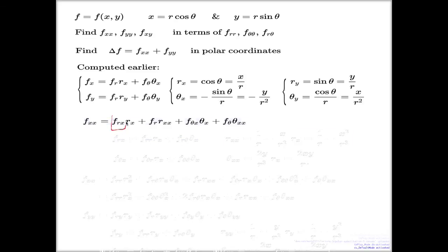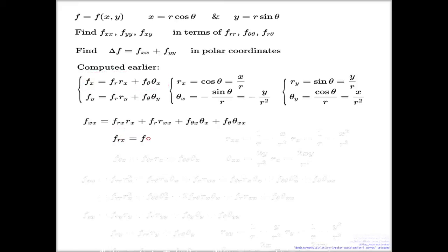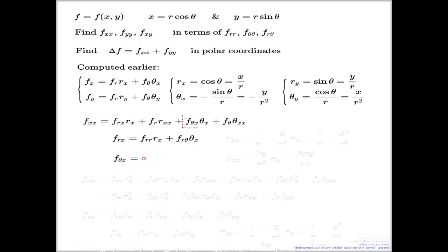Now this x derivative: I can apply the chain rule here. When I compute r sub x, it's r double r times r sub x, plus r sub theta times theta sub x — that's the chain rule. And when I compute theta sub x, it's another chain rule: theta sub r times r sub x, then theta sub theta times theta sub x, with the appropriate factors.